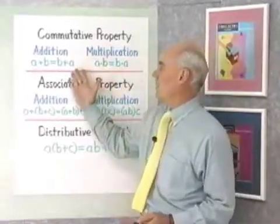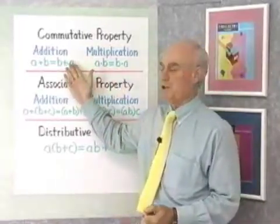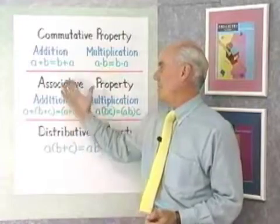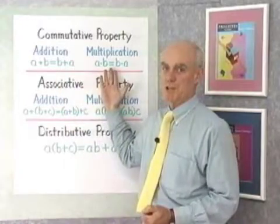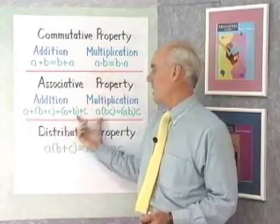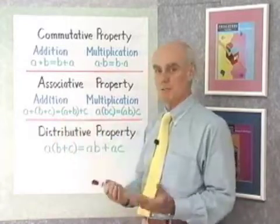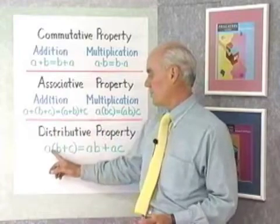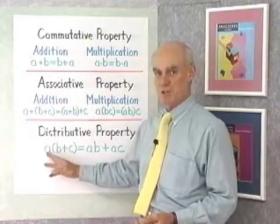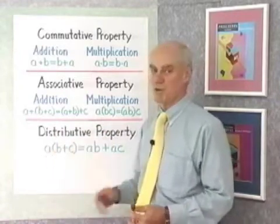I want to remind you of the properties here. We have commutative properties for addition and multiplication that allow us to change the order of numbers in a sum or a product, the associative property for addition and multiplication that allow us to change the grouping in sums and products, and then the distributive property that works with multiplication and addition, and we say that multiplication distributes over addition.